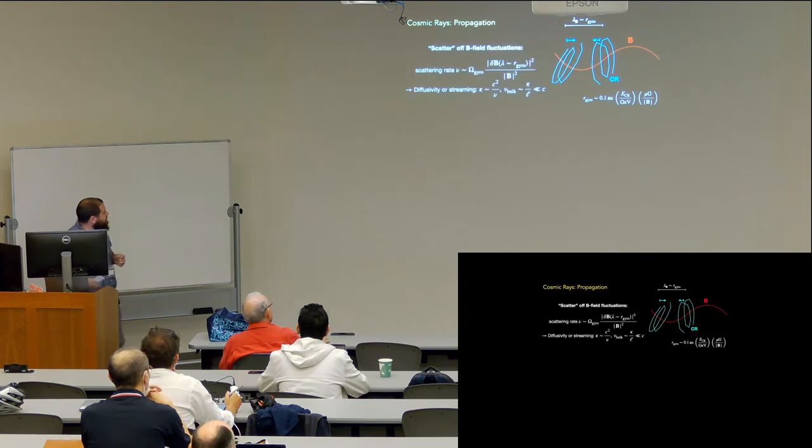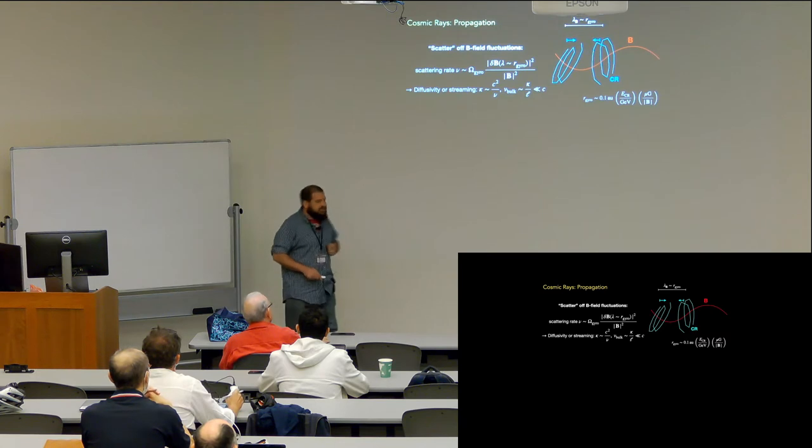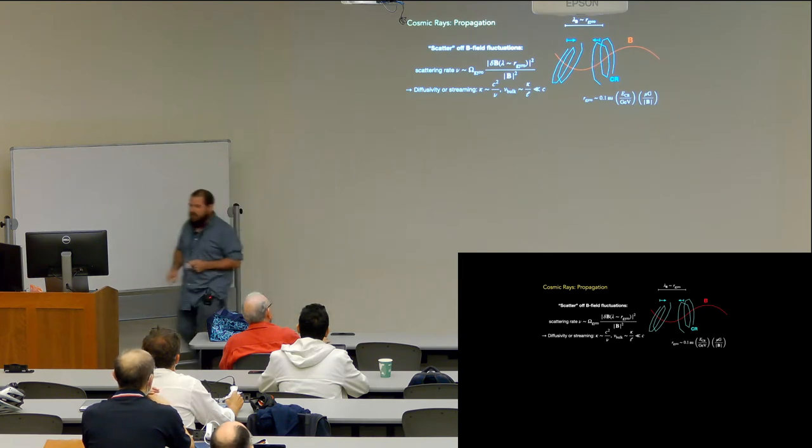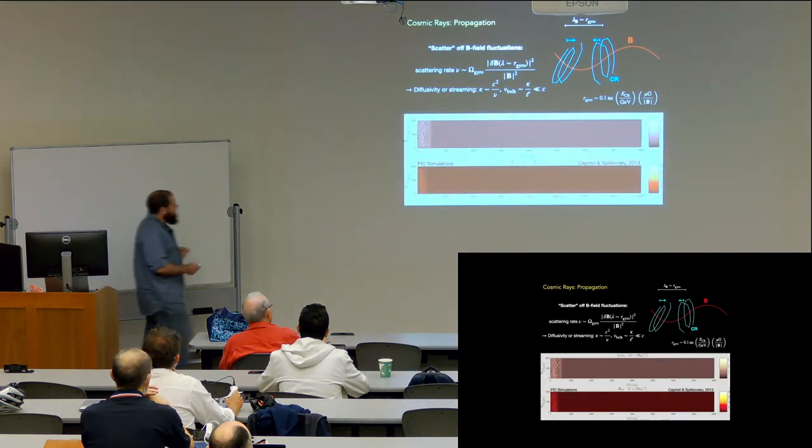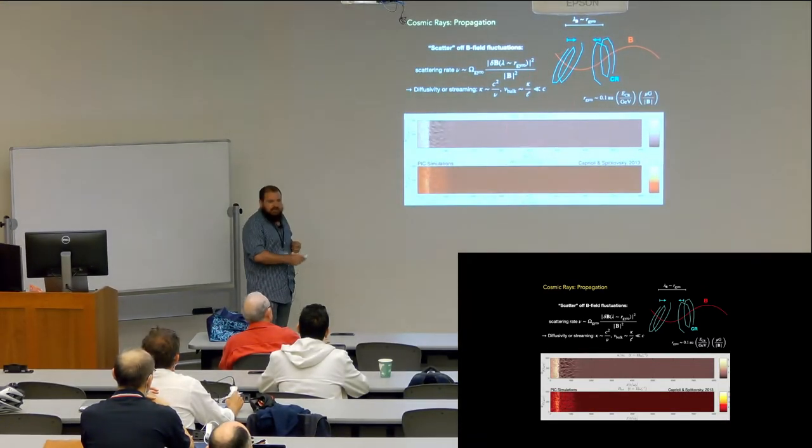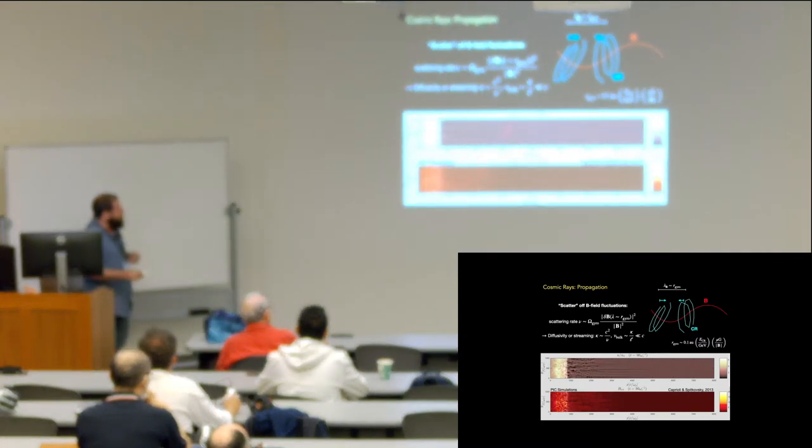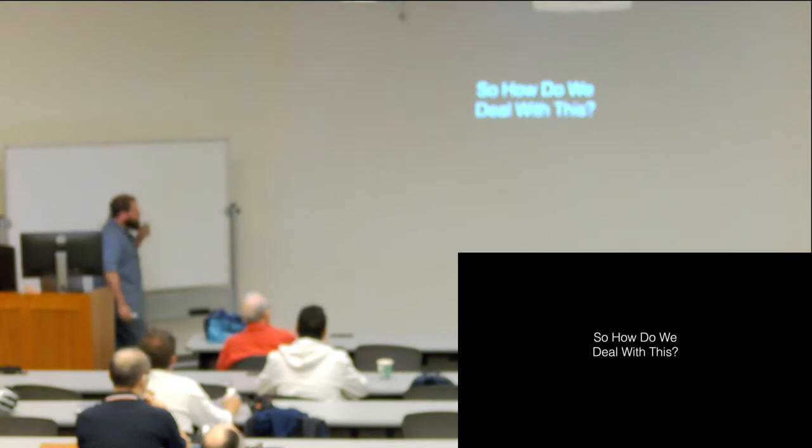And just to be complete, when people talk about things like the effective diffusion coefficient or the streaming speeds of cosmic rays, these are all just macroscopic functions of the scattering rate. The scattering rate is the fundamental quantity that we need to know. And basically our only tool to make even predictions for this thus far has been things like PIC simulations of cosmic rays and magnetic fields interact. This is some examples of a supernova shock PIC simulation.